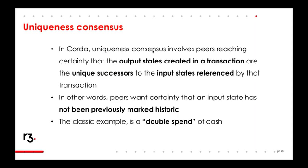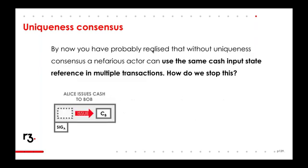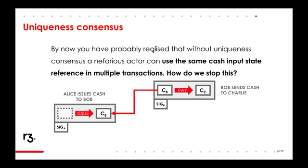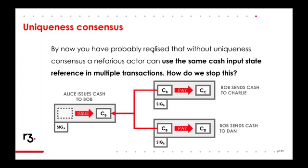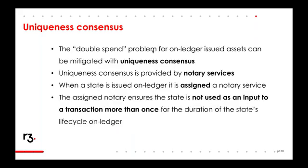We haven't touched on uniqueness consensus yet, but what we're really talking about is preventing double spends. We need certainty that the output states created in a transaction are the unique successors of all input states referenced by that transaction — assurance that those input states have not been used before. If Alice issues some cash to Bob and Bob subsequently uses this cash to pay Charlie and then uses the same cash to pay Dan, how do we know which transaction should be valid? Which one is the unique transaction? This is where notary services providing uniqueness consensus come in.